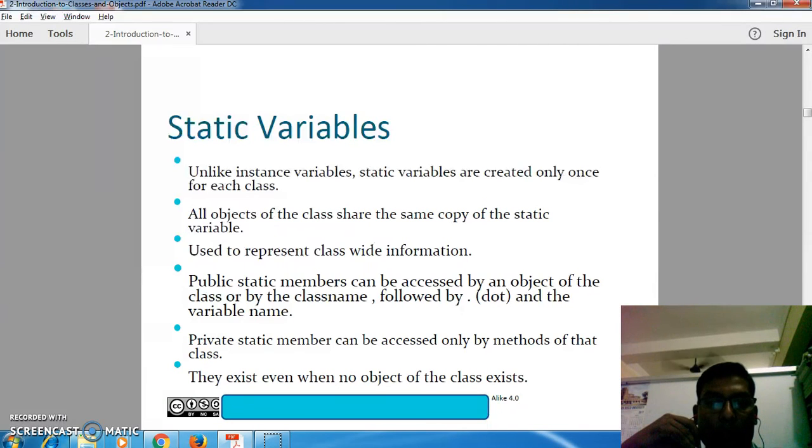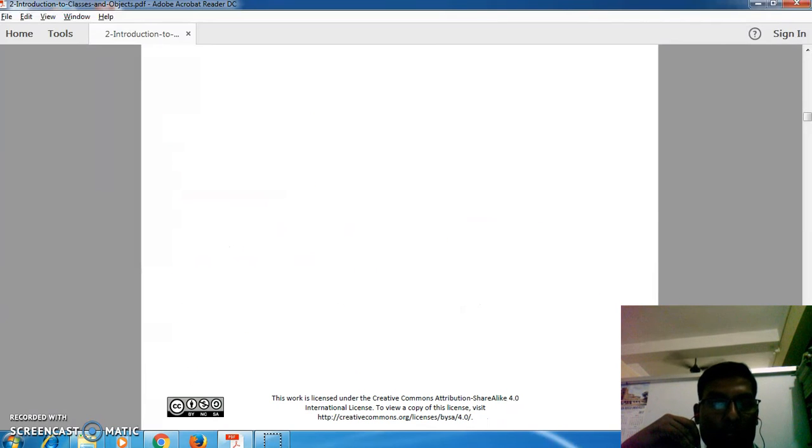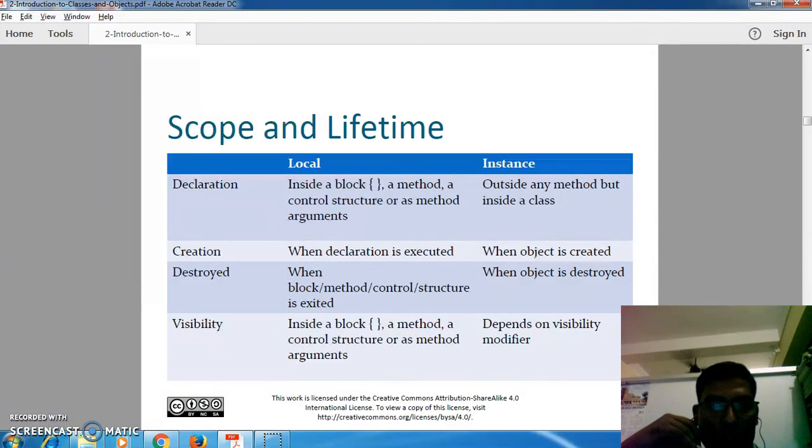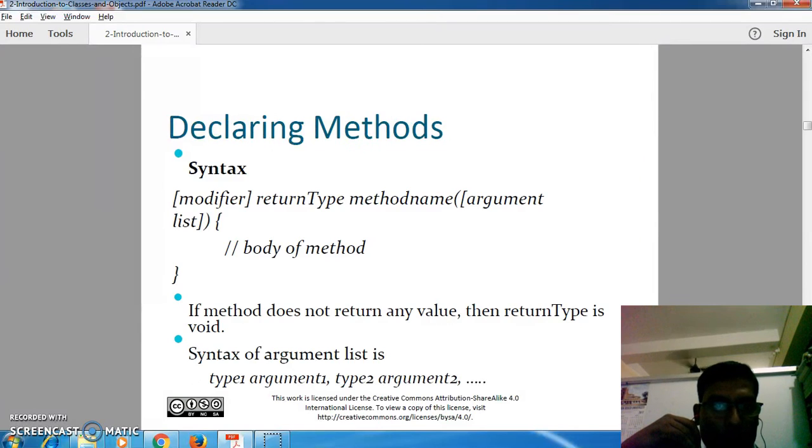Private static members can be accessed only by methods of that class. They can be accessed even when no object of the class exists. The scope is defined in the slides; you can go through that or skip it.